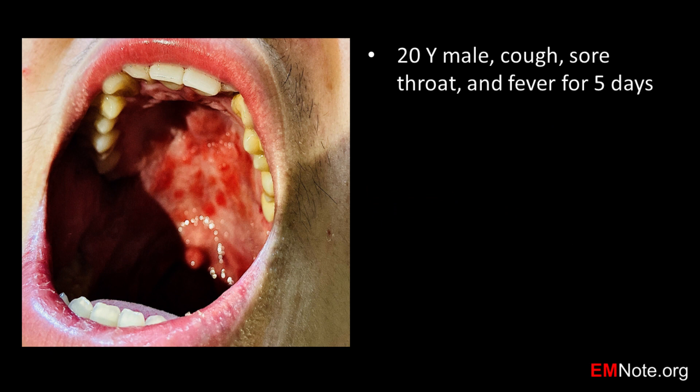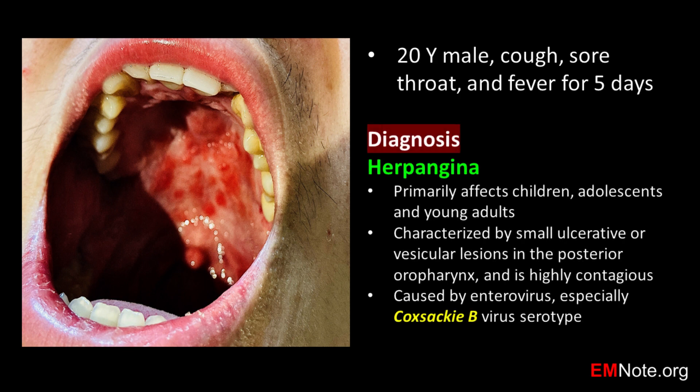This 20-year-old male has complained of a cough, sore throat, and fever for five days. Herpangina primarily affects children, adolescents, and young adults. It is characterized by small ulcerative or vesicular lesions in the posterior oropharynx and is highly contagious.